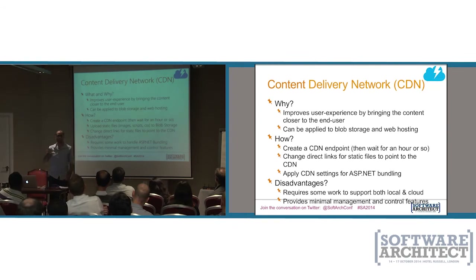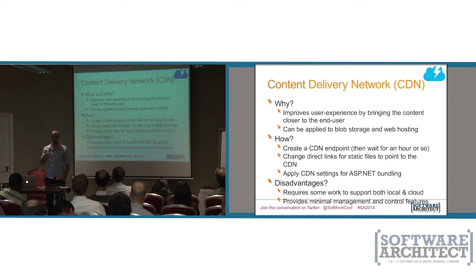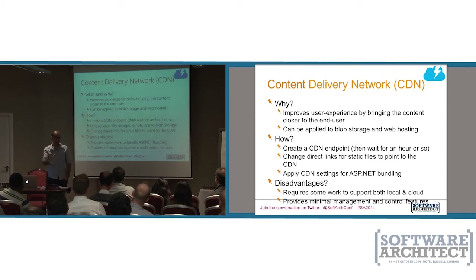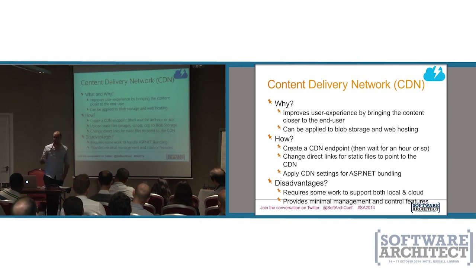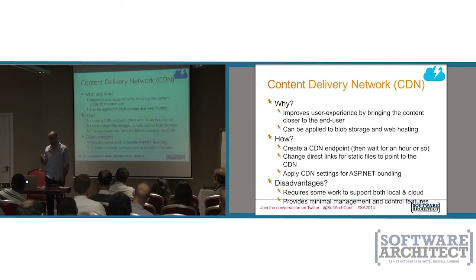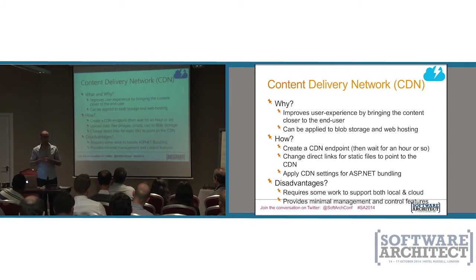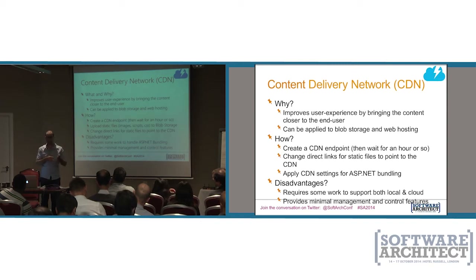Let me discuss CDNs for a second. Content delivery networks are basically an implementation of what we once knew as proxy servers. A proxy server stores responses from the web so you get them faster, but it's a single server located near you. Content delivery networks are a set of proxies all over the world with the same DNS name, but that DNS name resolves to different IP addresses in different parts of the world. So a CDN name can resolve to a server in the UK for UK users and to a different server in Germany for German users.